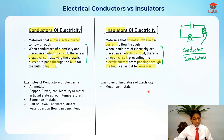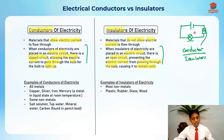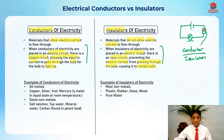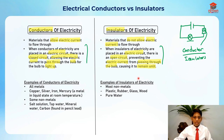For insulators, most non-metals are insulators — like plastic, rubber, glass, and wood. If any of these were placed in the circuit, the light bulb won't light up because there is an open circuit and no electric current can flow through, causing the bulb to remain unlit. Pure water is also an insulator of electricity.